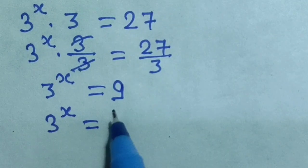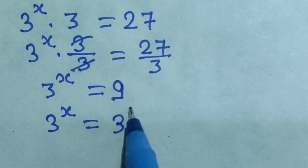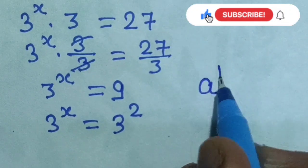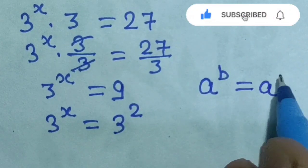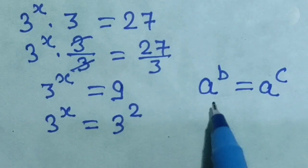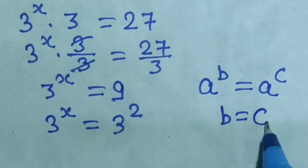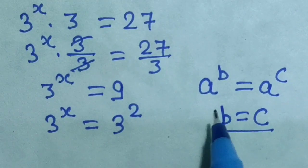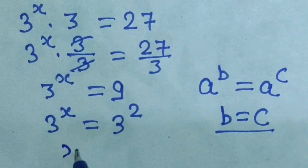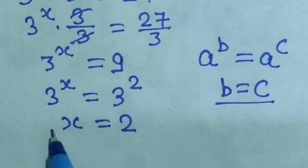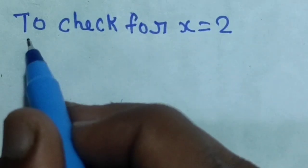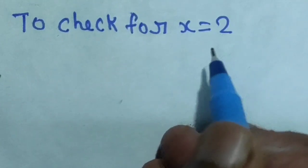We can write 9 as 3 power 2. Now we apply the exponent property: if a power b equals a power c, then since the base a is the same it cancels, so b equals c. Applying this here, since both bases are 3, we get x equal to 2.